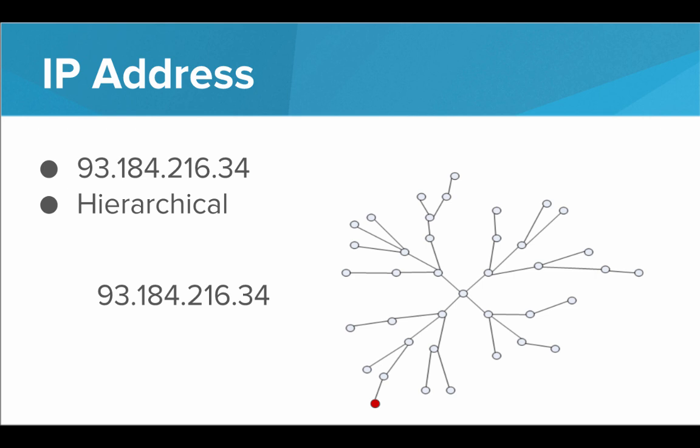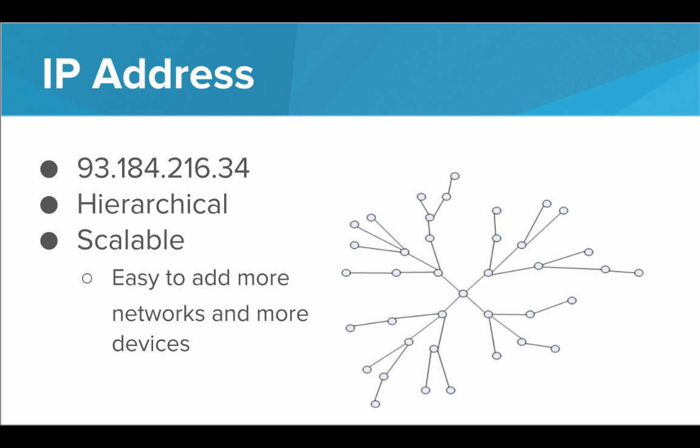Just like in the postal address, we're narrowing it down by country, state, zip code, street, and street address. Setting up IP addresses in this hierarchical way also allows the system to be very scalable — it's very easy to add more networks and more devices to the internet using this hierarchical layout. If we're adding a new device to a subnetwork, all we have to do is generate a unique number for the last number in the IP address. And if we're adding a brand new network to the internet, we just have to generate a new first number for the address.